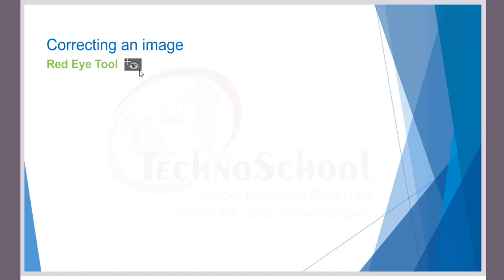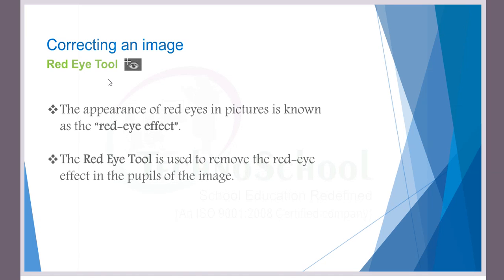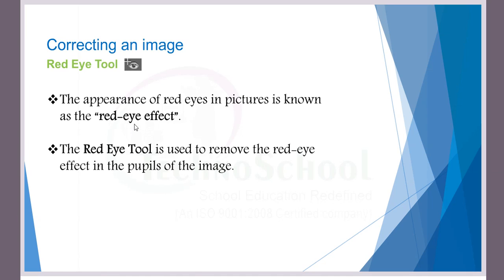Today we are going to see about correcting an image — a very important concept. There are many instances where you need to correct an image that has certain effects from the environment where it was taken. It could be a red-eye in an image or high beam of light in a photo. All this can be corrected easily in Photoshop. The first concept is the red eye effect.